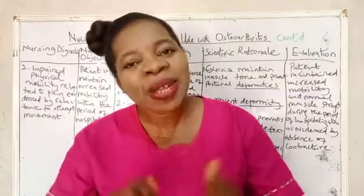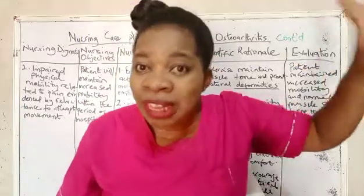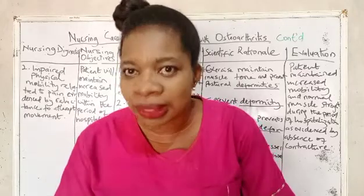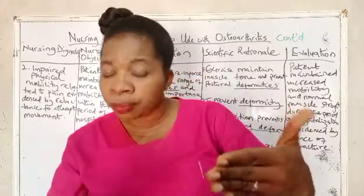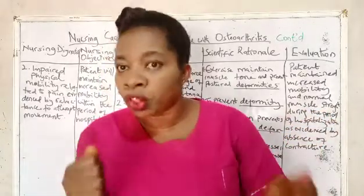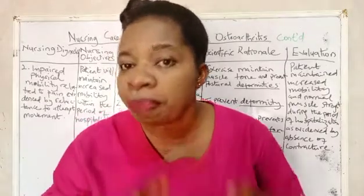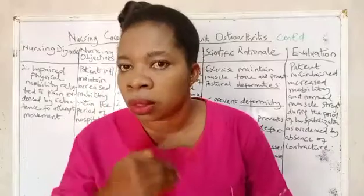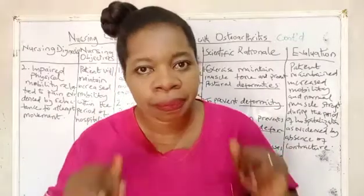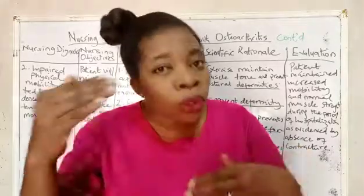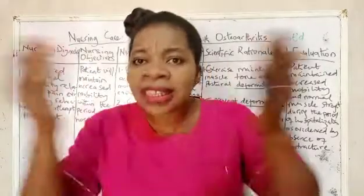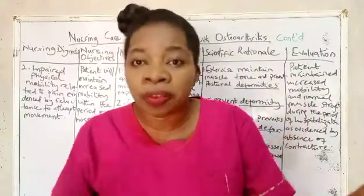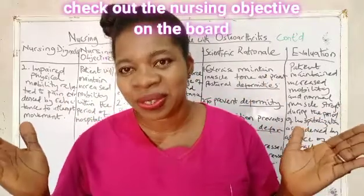Now let us go to the nursing care plan. The first diagnosis was covered in a previous video — please check that out. We are now taking the second diagnosis. From our pathophysiology, degeneration, formation of osteophytes, and stiffness of the joints lead to chronic pain. Our second nursing diagnosis is: impaired physical mobility related to musculoskeletal impairment and pain, evidenced by limitations of range of movement — the patient refuses to move, or attempts to move but experiences pain.